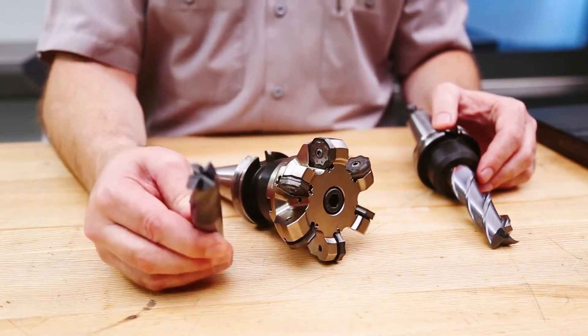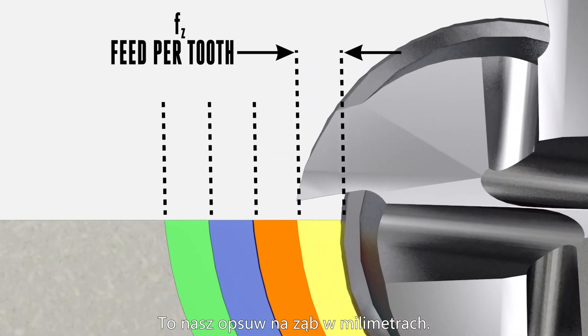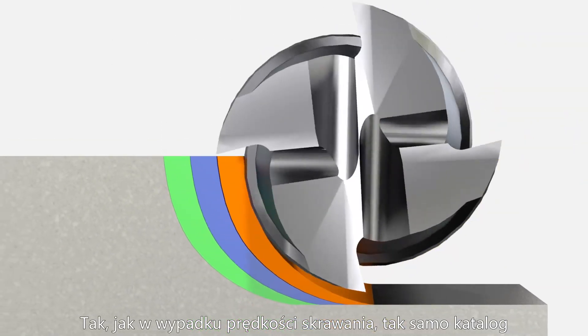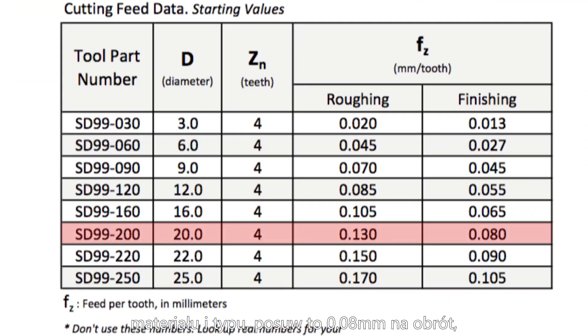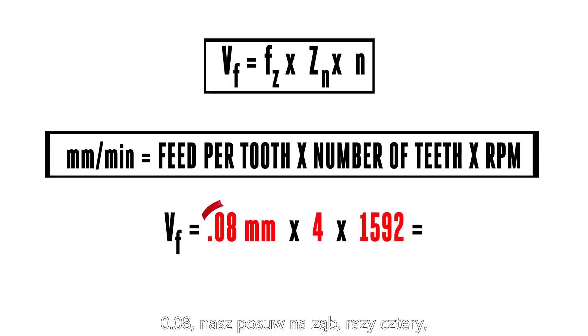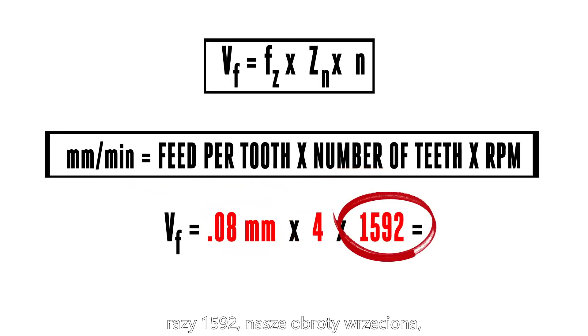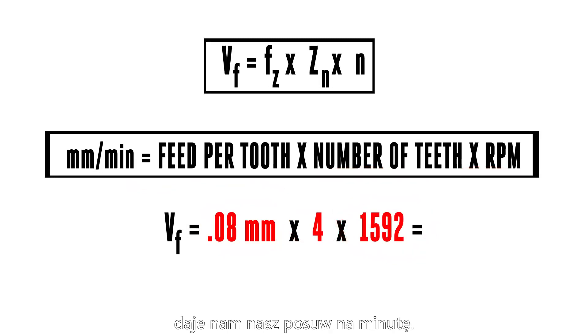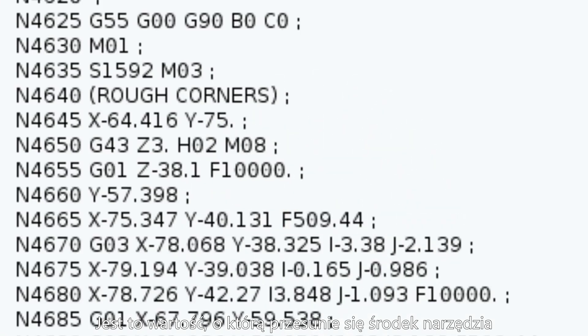We want our tool to take a very specific size bite with each tooth — this is our feed per tooth in millimeters. Just like our cutting speed, the catalog will give us that feed per tooth value. For my tool, material, and type of tool path, 0.08 millimeters per tooth is a good starting range. So: 0.08, our feed per tooth, times four teeth, times 1,592 RPM, gives us a feed rate of F509.44 millimeters per minute — how far the centerline of our tool moves along its programmed path each minute.